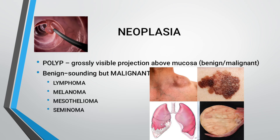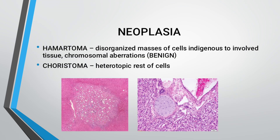A polyp is a grossly visible projection above the mucosa, which can be either benign or malignant. Some tumors are benign-sounding but malignant — for example, lymphoma, melanoma, mesothelioma, and seminoma. A hamartoma is a disorganized mass of cells indigenous to the involved tissues, with chromosomal aberration that is benign. A choristoma refers to heterotopic rest of cells.